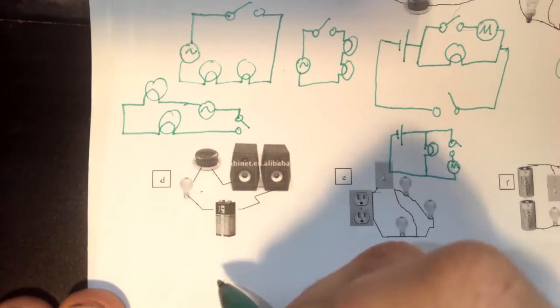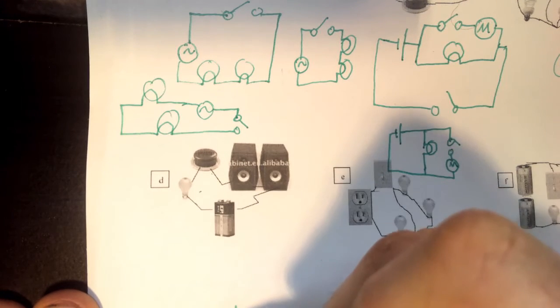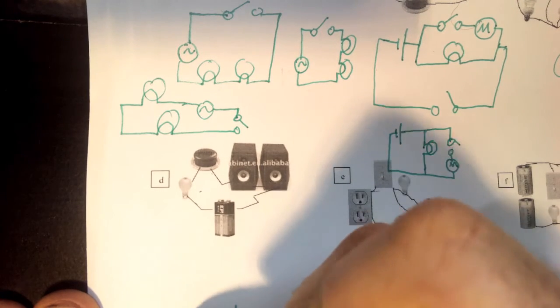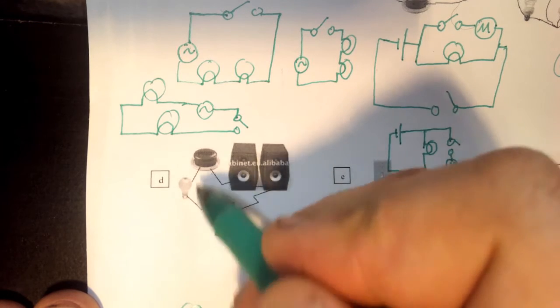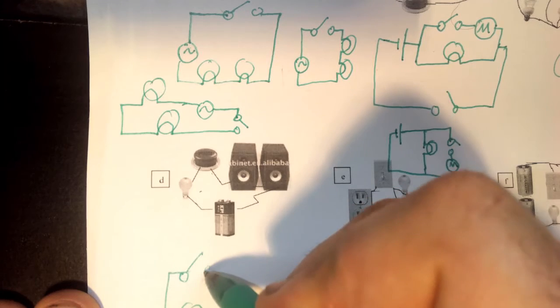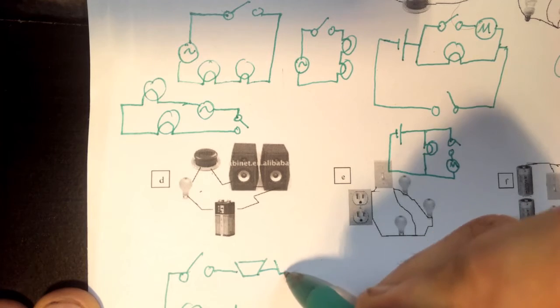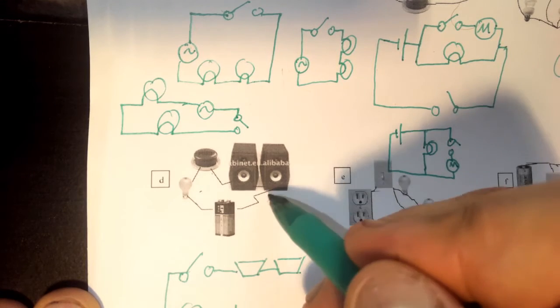Letter D. Power supply is a battery. And then we have a light bulb, and then we have a switch, two speakers, and then back to the battery.